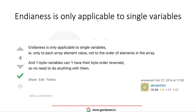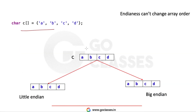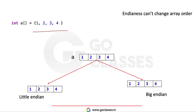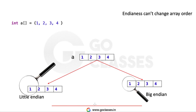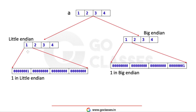Endianness is only applicable to a single variable — it does not reverse array order. If you have an array like {a, b, c, d}, it is a, b, c, d in both little-endian and big-endian. Similarly, an integer array {1, 2, 3, 4} stays 1, 2, 3, 4 in both. Endianness does not change array order, but if one element of the array is multiple bytes, then that individual element is stored based on endianness.